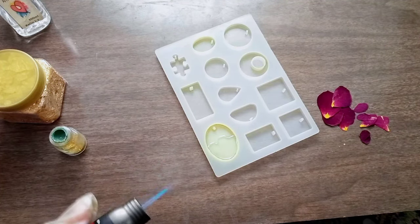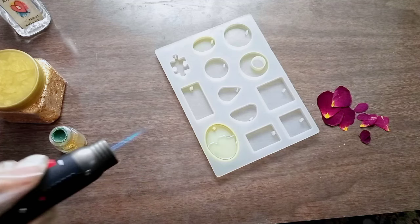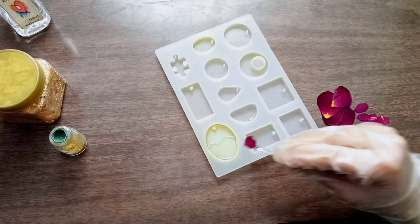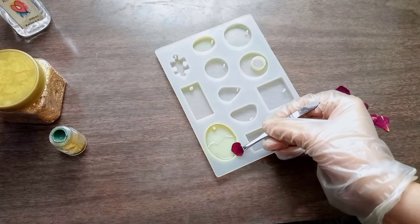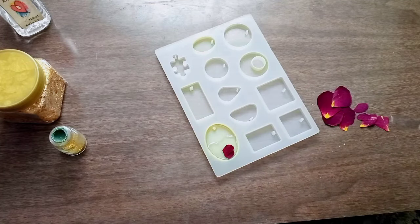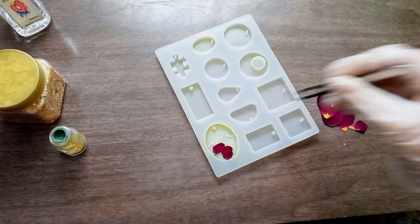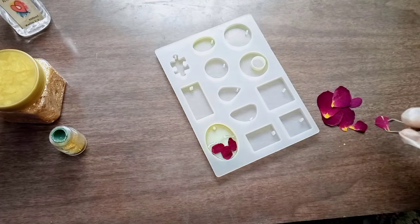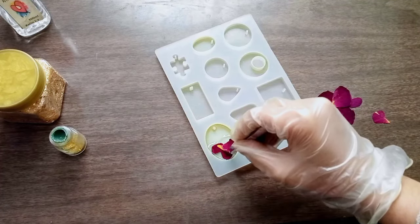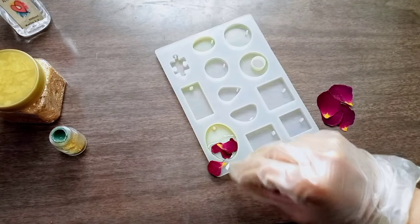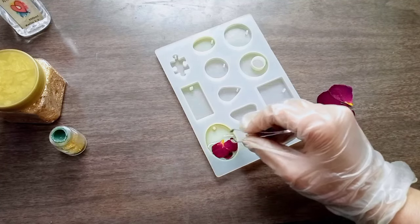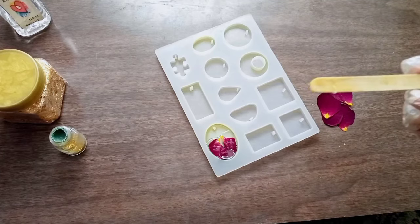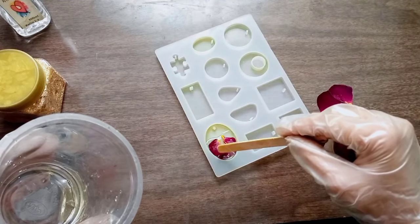Heat it to pop out the bubbles. Don't heat it too closely, so be careful. Now arrange the petals as you wish. After arranging them, let's pour the second layer of resin.